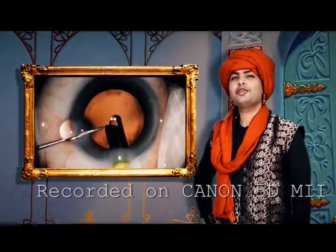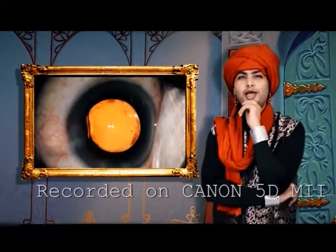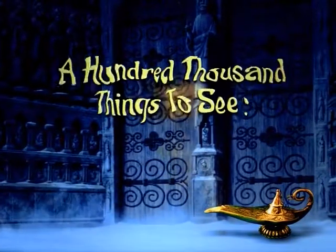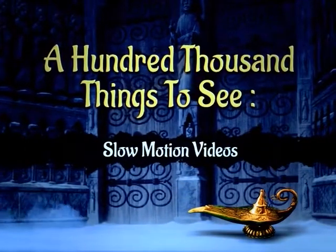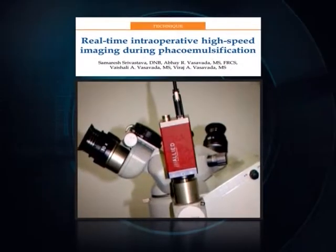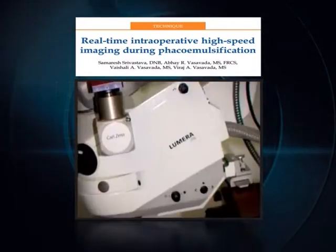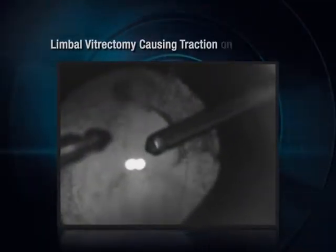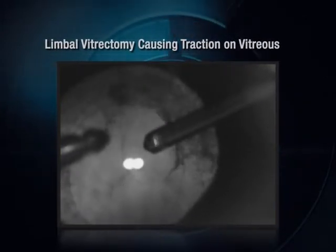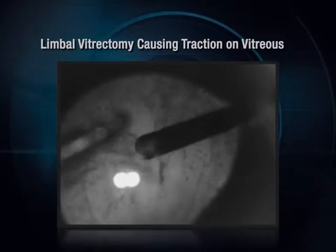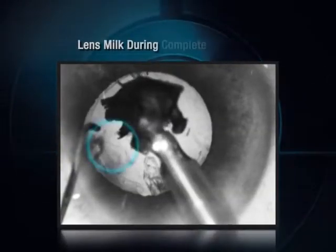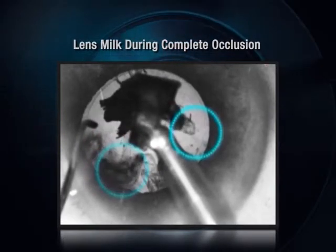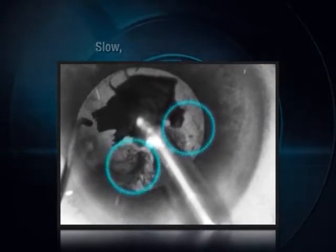With all these options for HD recording, we now turn to slow-motion videos. A high-frame-rate camera is connected to the operating microscope, giving us super slow-motion videos. These do much more than just make enthralling visuals — the application of this technology in ophthalmology helps us understand the details of those split-second phenomena that are beyond the comprehension of normal visual perception. These can help both experienced and novice surgeons to refine their techniques and understand their outcomes better.